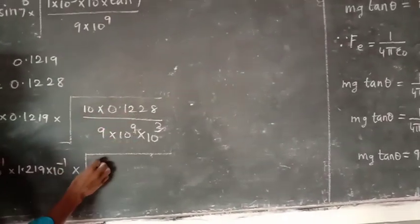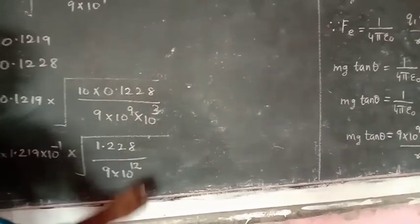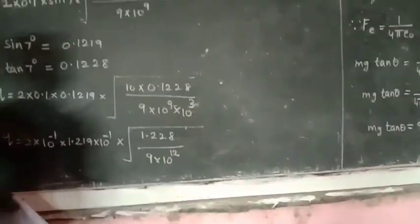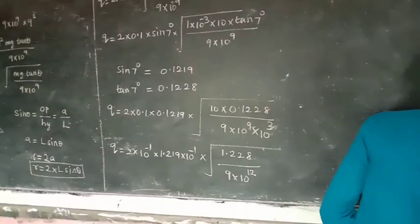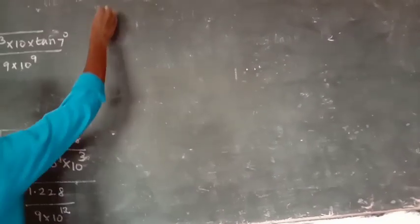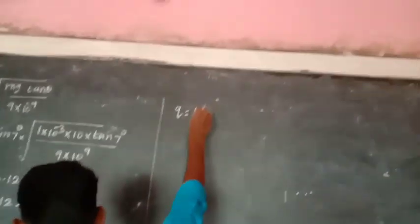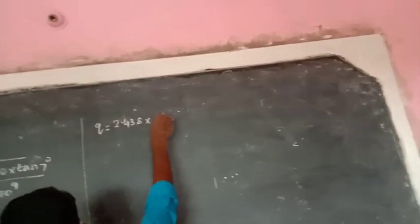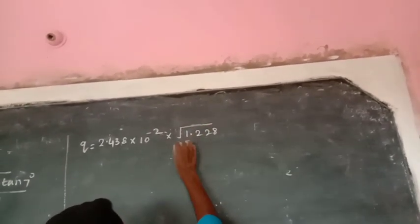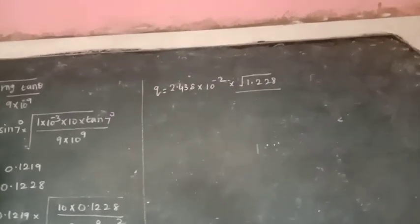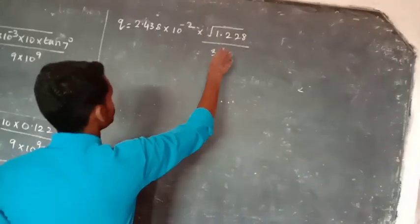Taking the square root gives approximately 25.4385, which is equivalent to 2 to 8. The power is equivalent to 3 to 9, and is equivalent to 2 to 8. This is with power 10 to the power 6.